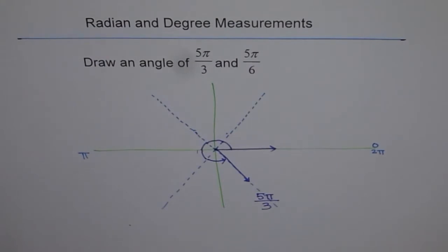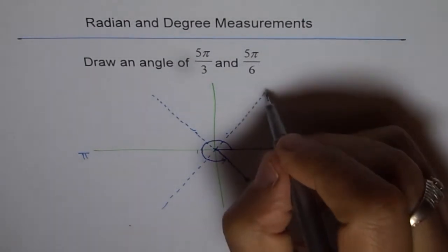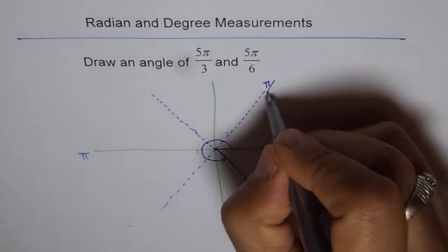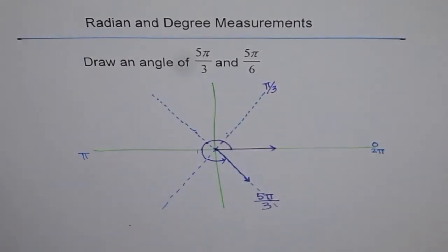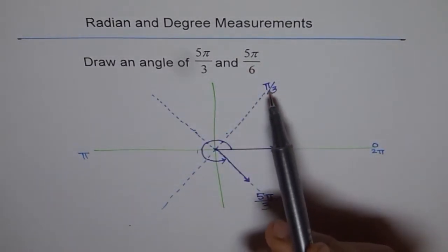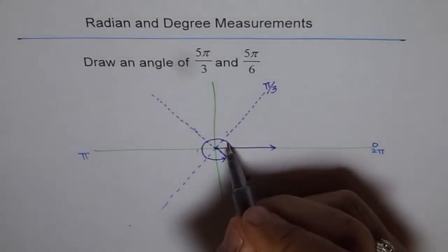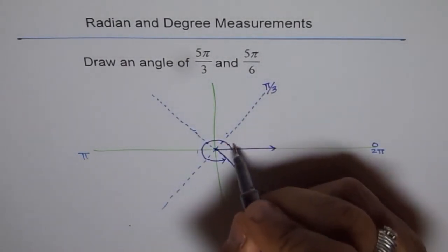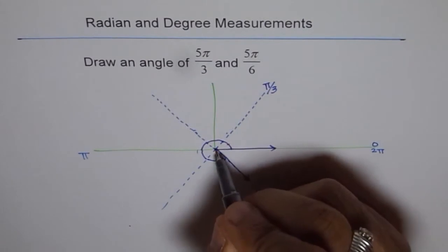Now the question is how to draw 5π/6. So we already have a division and each division for us was actually π/3. So let me write π/3 here for the time being. But what do we need now? We need π/6. That means half of this. So half of this, let's bisect this and then get π/6. So let's do that.